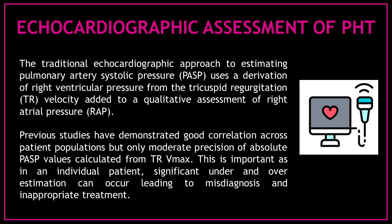How can we assess pulmonary hypertension with echocardiography? The traditional echocardiographic approach to estimating pulmonary artery systolic pressure uses a derivation of right ventricular pressure from the tricuspid regurgitation velocity, added to a qualitative assessment of right atrial pressure. Previous studies have demonstrated good correlation across patient populations, but only moderate precision of absolute pulmonary artery systolic pressure values. In an individual patient, significant under- and overestimation can occur, leading to misdiagnosis and inappropriate treatment.